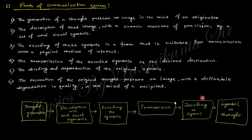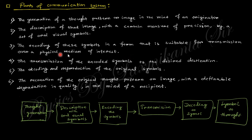The schematic diagram of the communication process is like this: first you generate some thoughts, then describe with oral or visual symbols, then encoding the symbols, then transmission, then decoding, then symbol to thought. That means first generate a thought or pattern or image in mind, then describe these images using oral or visual symbols, encode these symbols into a form suitable for transmission over a physical medium, transmit the encoded signal to the desired destination, then decode to reproduce the original symbols, so information transfers from one person to another.